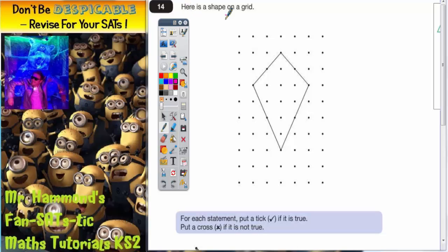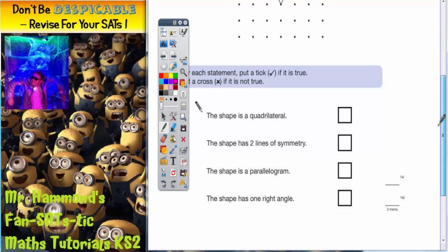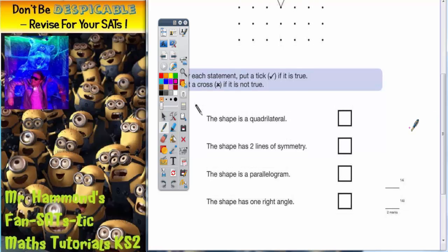Question 14. Here is a shape on a grid. For each statement, put a tick if it is true, put a cross if it is not true. So let's have a look at the statements and we'll take each statement one at a time. The first statement says the shape is a quadrilateral. Now remember, a quadrilateral is any shape with four sides. So does it have four sides?